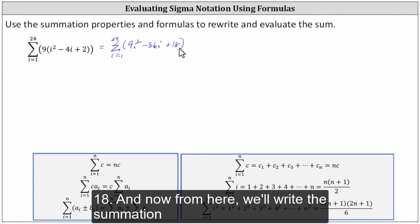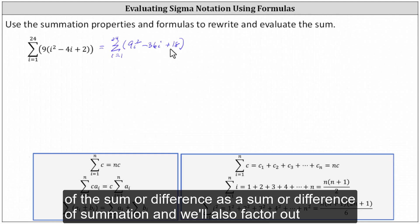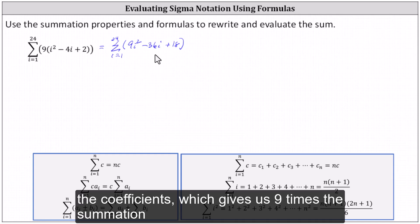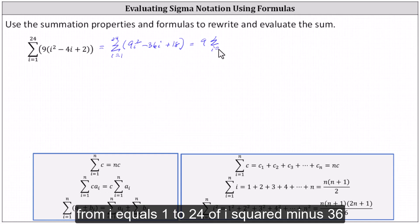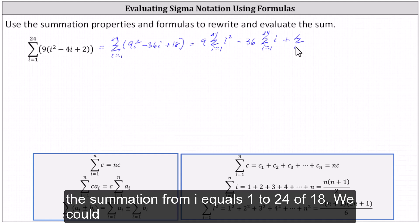And now from here, we'll write the summation of the sum or difference as a sum or difference of summations, and we'll also factor out the coefficients, which gives us 9 times the summation from i equals 1 to 24 of i squared minus 36 times the summation from i equals 1 to 24 of i plus the summation from i equals 1 to 24 of 18.